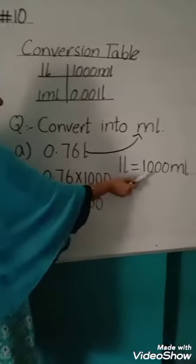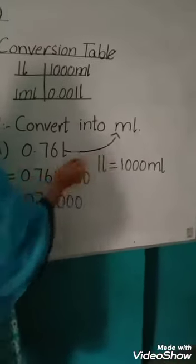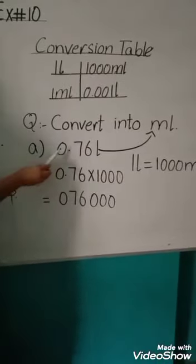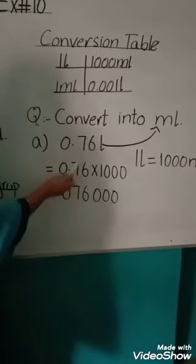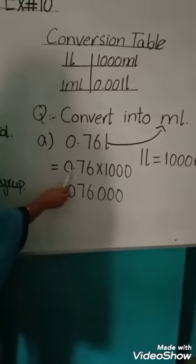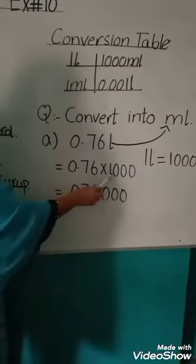So, 1 liter is equal to 1000 ml. Now we multiply 0.76 by 1000. 0.76 multiplied by 1000.